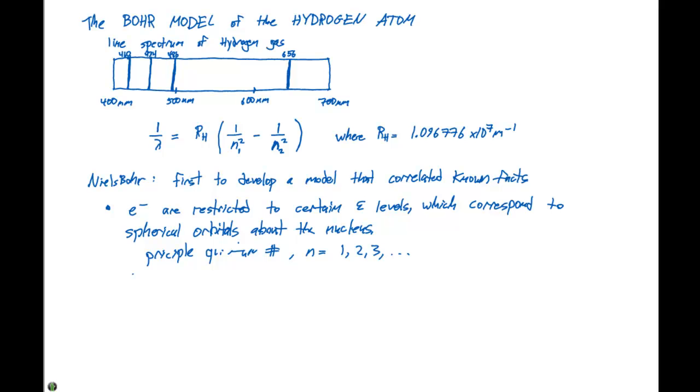There's something called the ground state, which has N equal to one, and that's going to be closest to the nucleus with lowest energy.